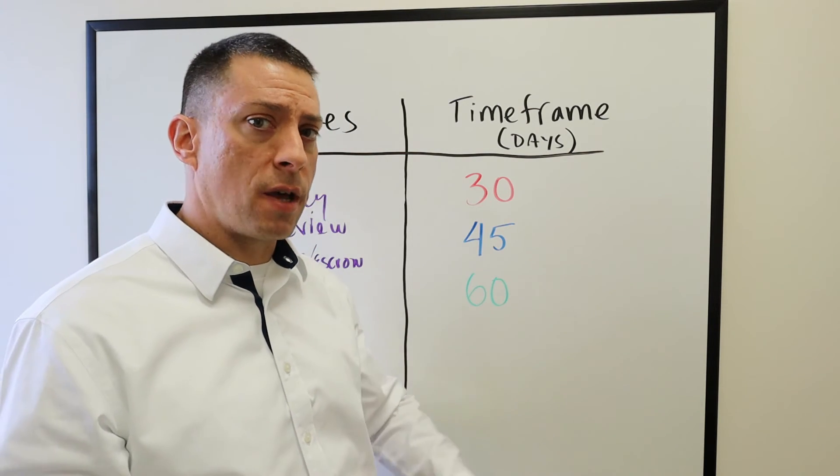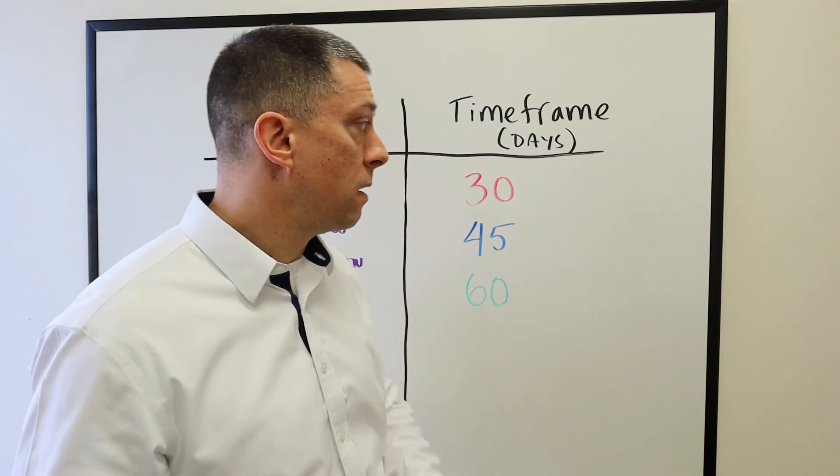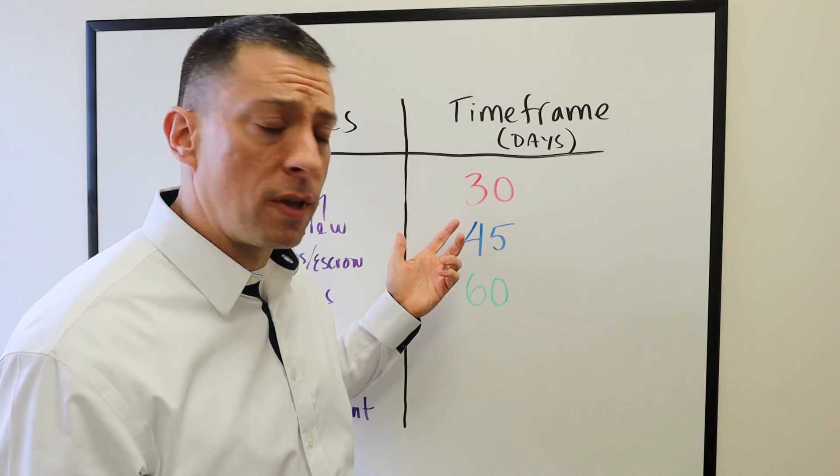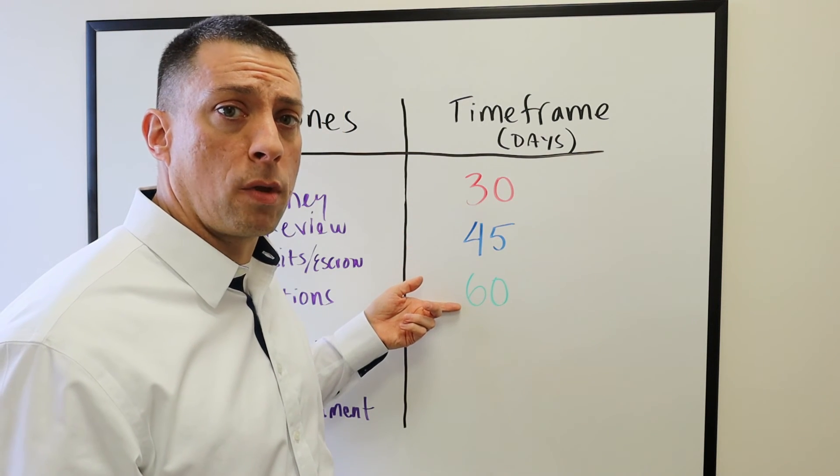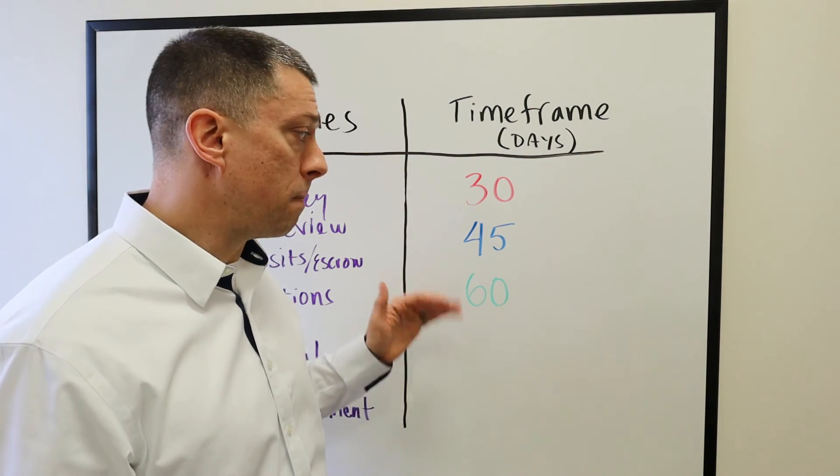If the seller of the property has to move because they're closing on another property in 30 days, well they're going to be looking for a 30-day closing. If they haven't found a place to move yet, they'll be looking for something more like 60 days. Just keep that in mind.